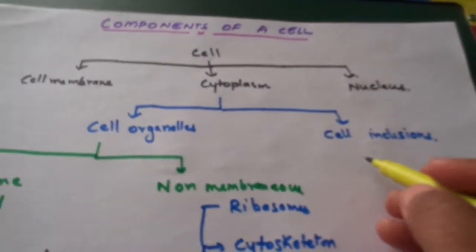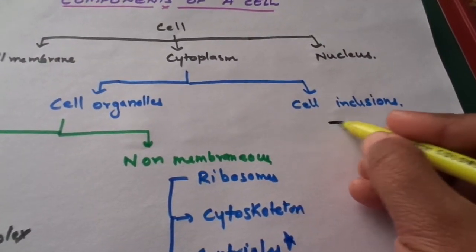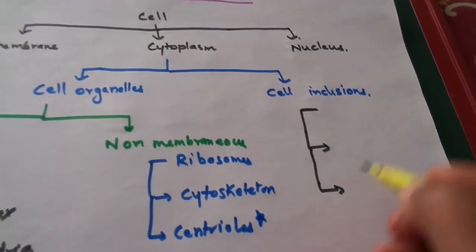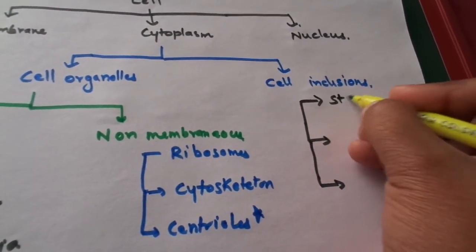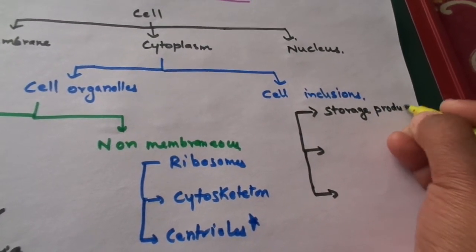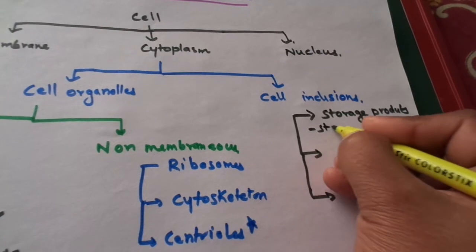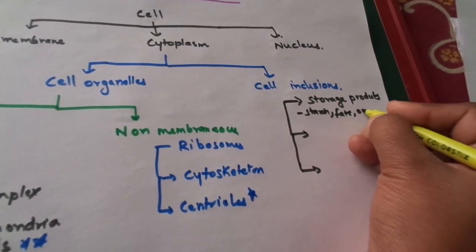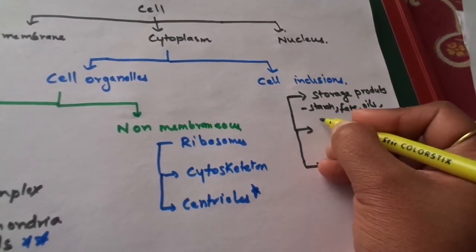The cell inclusion contains three parts. It can be divided into three parts. First is storage product that includes starch, fats, oils and proteins.